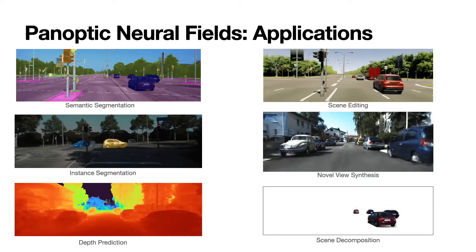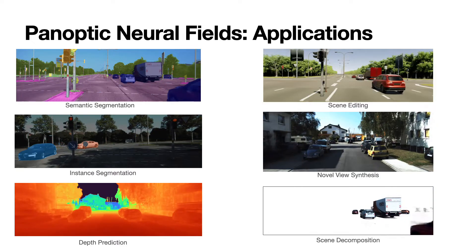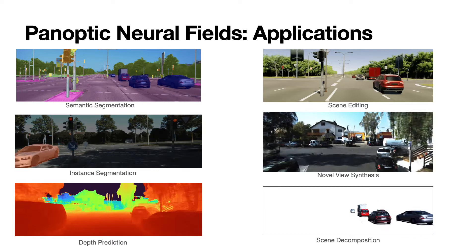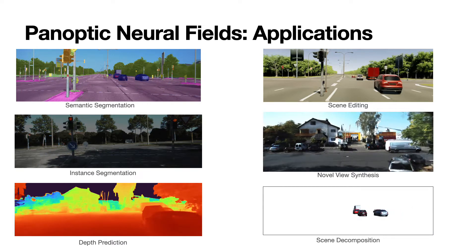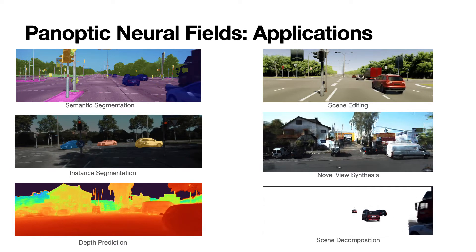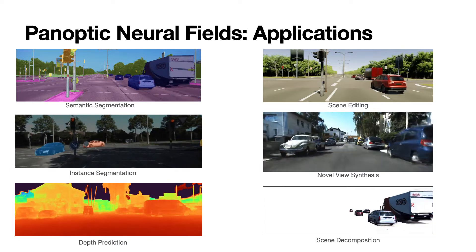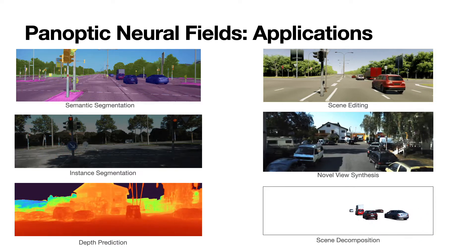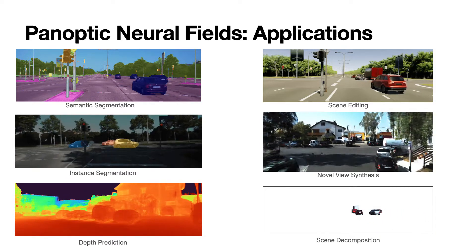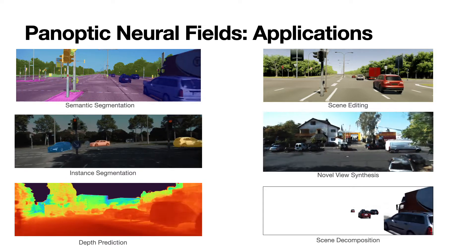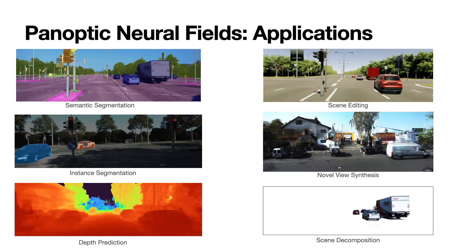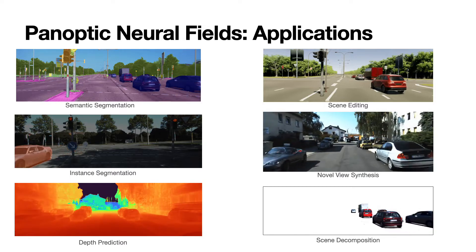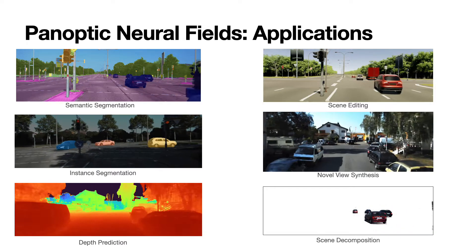Our representation produces a neural field which can be queried to obtain density, color, semantic, and instance label of any 3D point over time. We demonstrate several applications of our framework like panoptic segmentation, depth prediction, novel view synthesis, and scene editing.